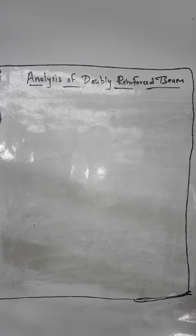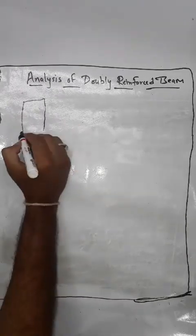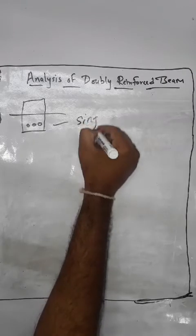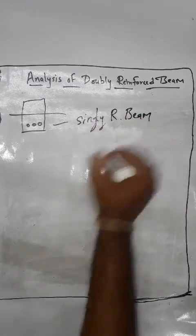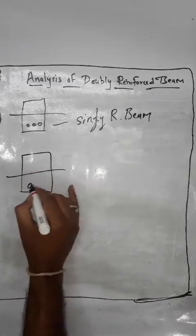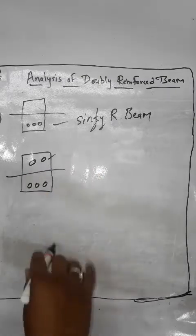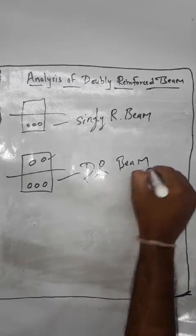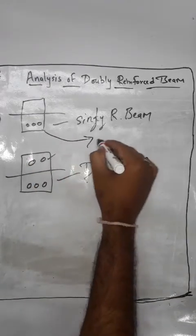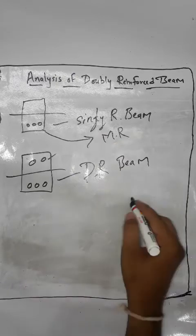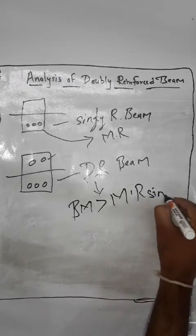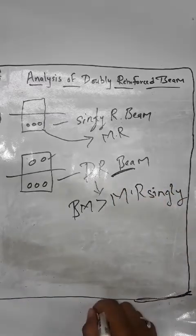Here we discuss the analysis part of doubly reinforced beam using a diagram. In our previous lecture we studied that if we provide reinforcement only at the tension side, the beam is called a singly reinforced beam. But in a doubly reinforced beam, we also provide reinforcement on the compression side. The condition for using a doubly reinforced beam is when the bending moment is greater than the moment of resistance of a singly reinforced section.